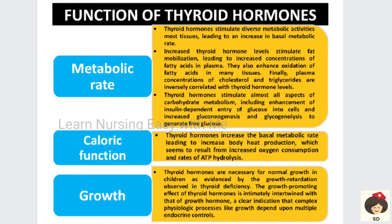The main function of thyroid hormone is metabolism. Thyroid hormone helps in maintaining the basal metabolic rate. Whenever basal metabolism occurs in tissues, thyroid hormone drives it. When thyroid hormone is increased in the blood, there will be fat mobilization — excess fat is removed from the serum, converted into glycogen, and stored as adipose tissue. Thyroid hormones also enhance oxidation of fatty acids, reducing fat in the blood plasma, and they decrease cholesterol and triglyceride levels in the blood.